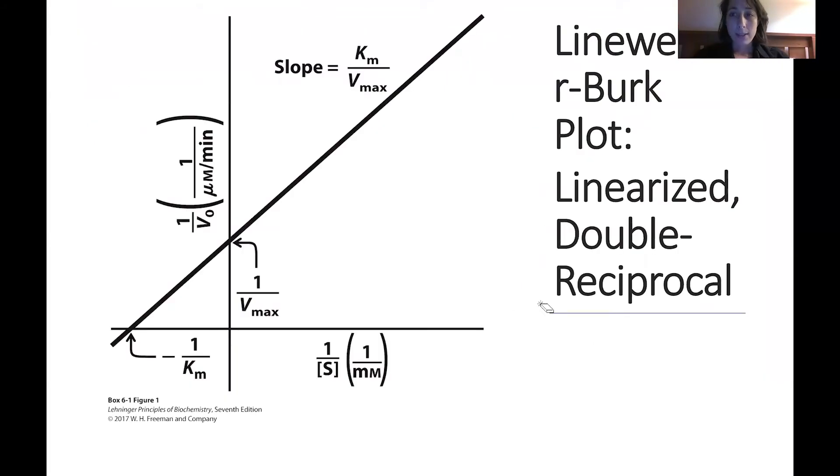Now, how do we distinguish types of substrate binding utilizing this type of plot? Here is an example of a Lineweaver-Burk plot or, again, a linearized double reciprocal plot.